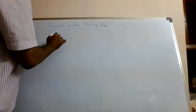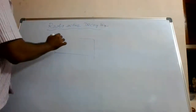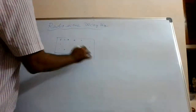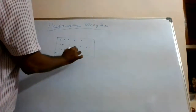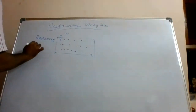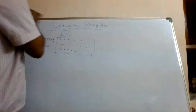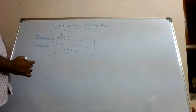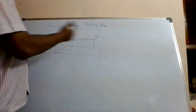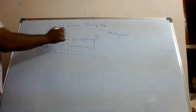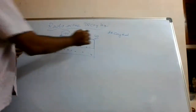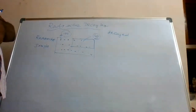If I take a radioactive sample, it has got some nuclei — let us say 100 nuclei. Out of this particular lot, 40 are getting decayed. Why? Because 100 is a big number and it wants to become more stable. This decay is a natural process, and these nuclei are trying to get decayed, so decay means it will take some time.